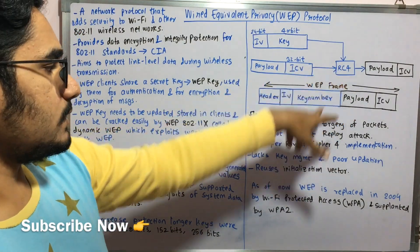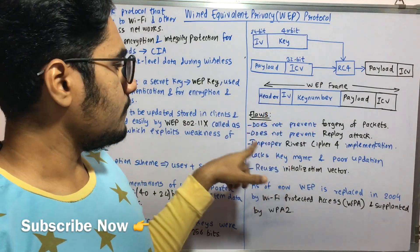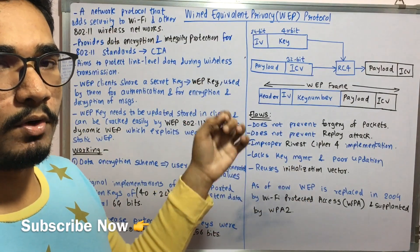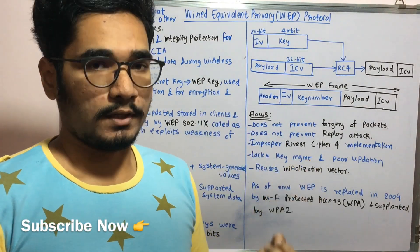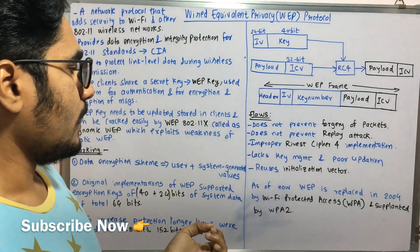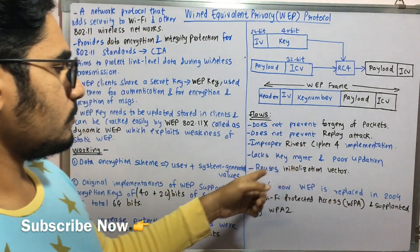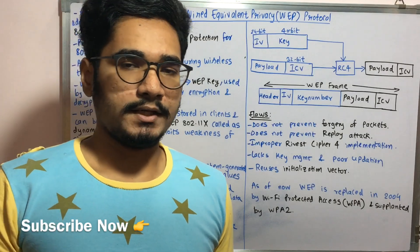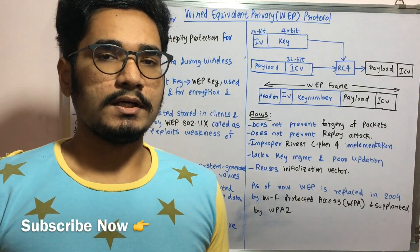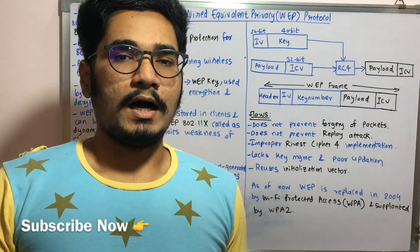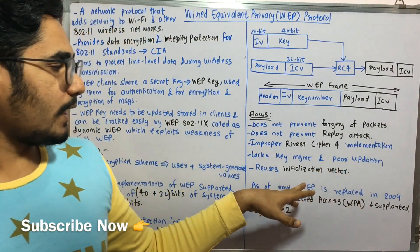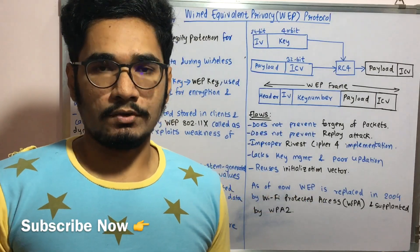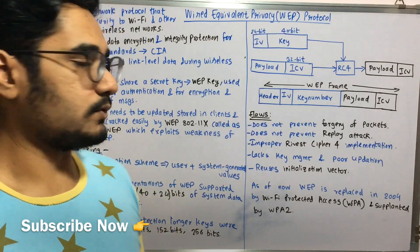The RC4 used in WEP is very vulnerable and improperly implemented. WEP also lacks key management since all keys are shared among different WEP clients with very poor update mechanisms. It reuses the initialization vector, which means brute-force attacks are possible, and freely available software on the internet can be used to decrypt the data. Overall, WEP is not very secure.